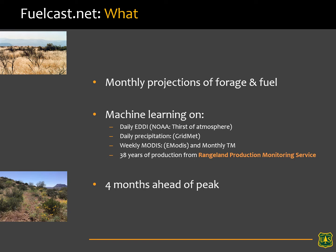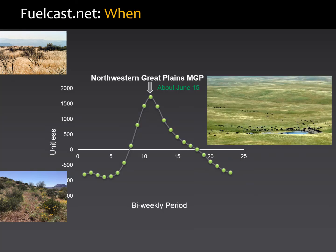All that information is trained against our Rangeland Production Monitoring Service, which offers geospatial depictions of rangeland yield — that's productivity — from 1984 to present day. Importantly, FuelCast starts four months ahead of the peak, so you get to look four months in advance. In the northern Great Plains mixed grass prairie, if the peak is about June 15th, you subtract four months and FuelCast will start around February 15th, beginning those projections for you to use.